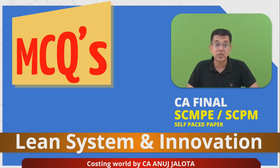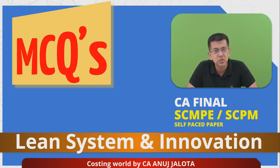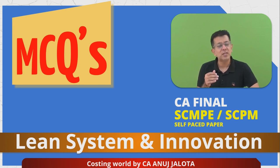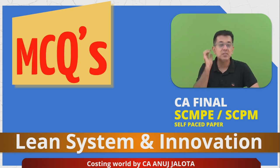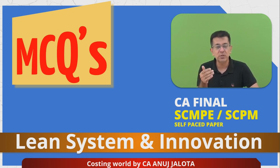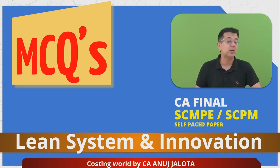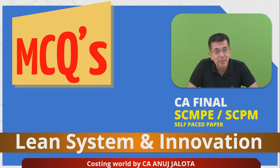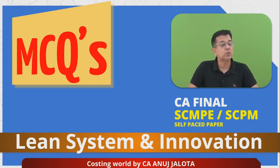Chapter number three — Lean Systems and Innovation — is basically a chapter which tells you what a company can do to minimize its cost and make its products and systems far more effective. Lean systems means clean systems. Like we say a guy's body is lean, meaning there is no body fat. So therefore there should not be any waste — that is what is meant by lean systems. This chapter introduces you to many techniques of lean systems: it could be Kaizen, it could be 5S, it could be TPM, and so on and so forth.